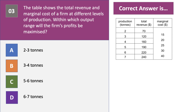Question three: the table shows the total revenue and marginal cost of a firm at different levels of production. Within which output range will this firm's profits be maximized? Press pause and have a go. Profit maximization is when marginal revenue equals marginal cost, so we're looking for an output range where MR meets MC.